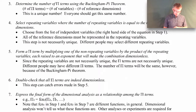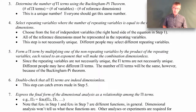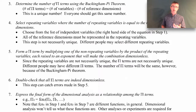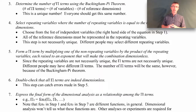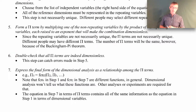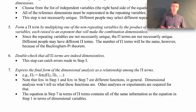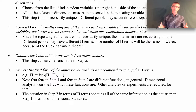Step five is where we actually form the pi terms. We take each non-repeating variable, multiply it by the repeating variables raised to some power, and figure out what those powers are to make the whole expression dimensionless. Step six is to verify that all the pi terms formed in step five are indeed dimensionless. If you've done everything correctly in step five they should be dimensionless, but step six is just to catch any little errors. It seems trivial, but do it because it'll catch simple mistakes.